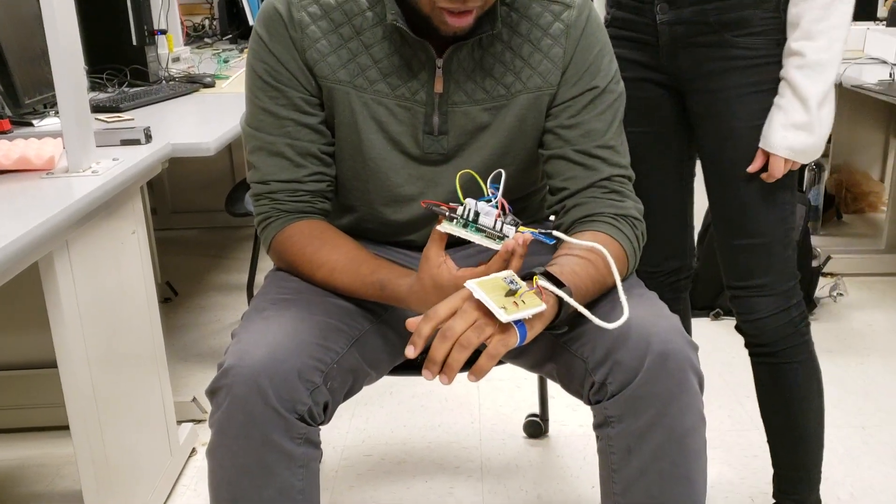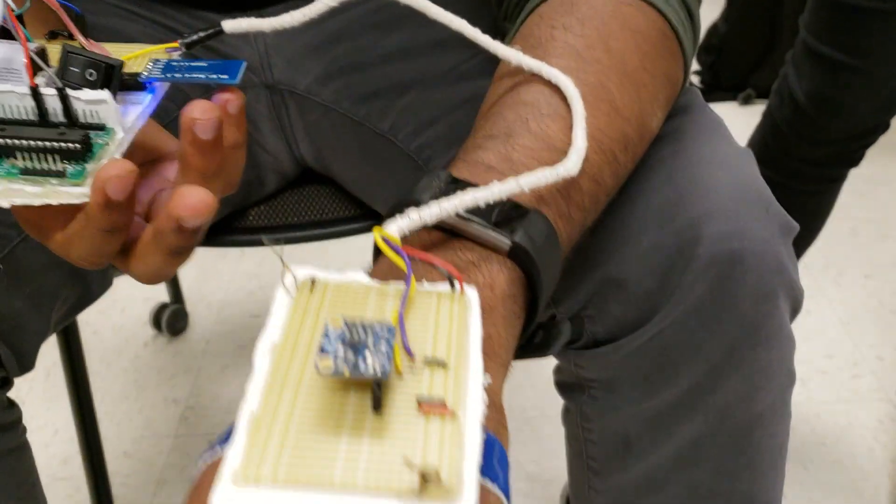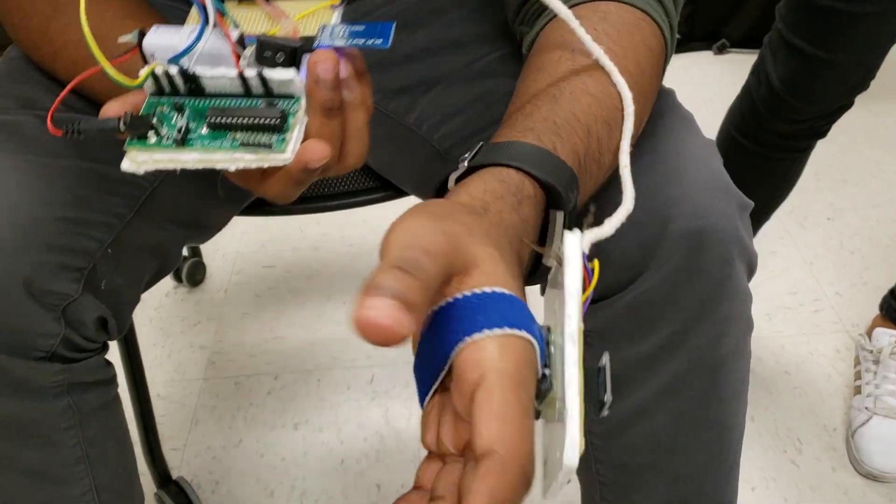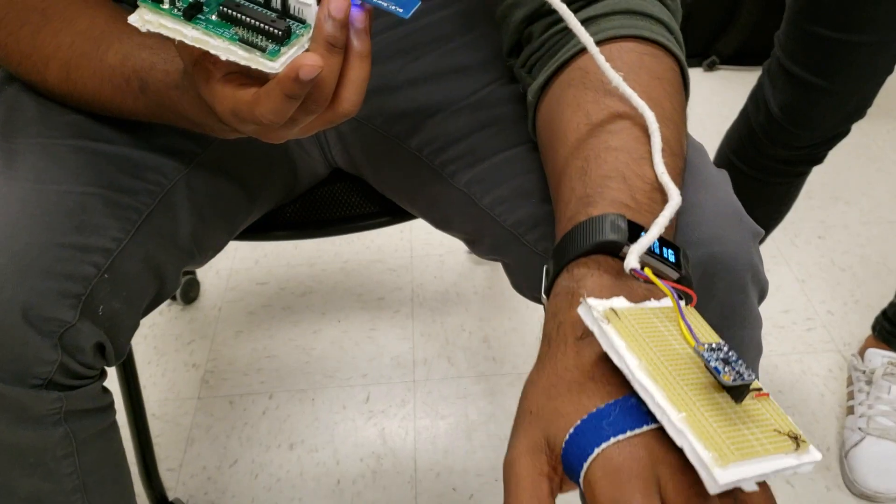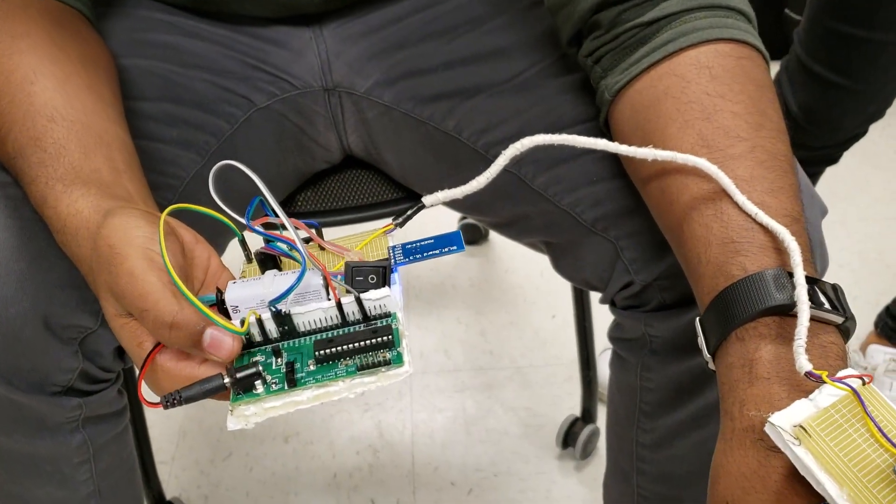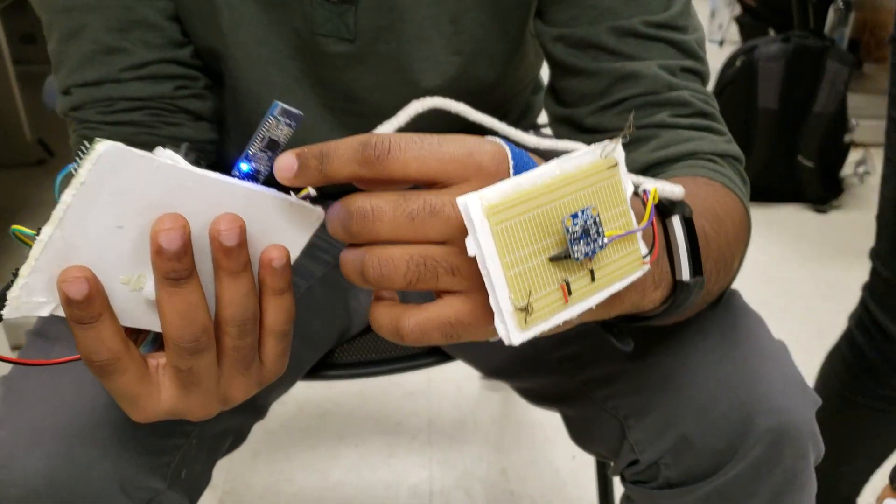So, we currently have an accelerometer hooked up to my hand, as you can see over here, which is used to detect the pitch and the roll angle of my hand orientation, and that information is then transmitted to the PIC board over here, which actually computes that information and transmits it via the Bluetooth module, which is over here.